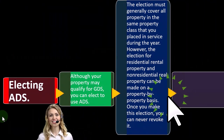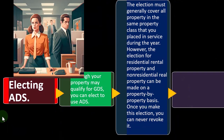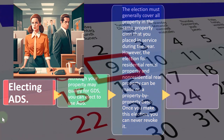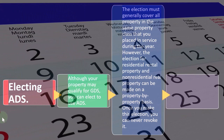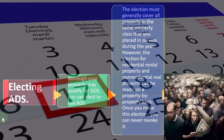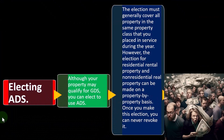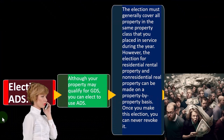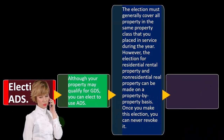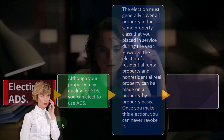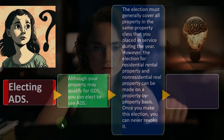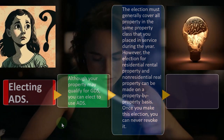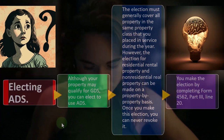The election must generally cover all property in the same property class that you placed in service during the year, so you have to be somewhat uniform within that year. However, the election for residential rental property and non-residential real property can be made on a property-by-property basis. Once you make this election, you can never revoke it, which makes sense because we're trying to depreciate something over its useful life, and you can't really deviate from the depreciation method once you're going.